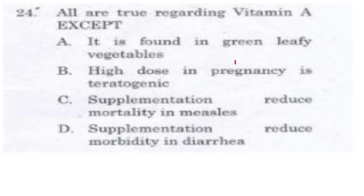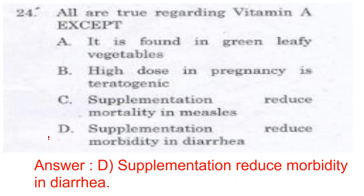Option C is supplementation to reduce mortality in measles/meningitis, Option D is supplementation to reduce morbidity in diarrhea. The answer is D option — if it is diarrhea, you would not give vitamin supplementation for morbidity reduction.